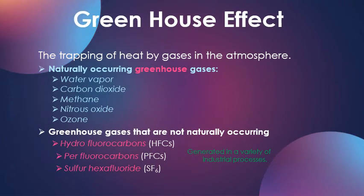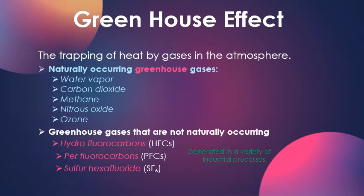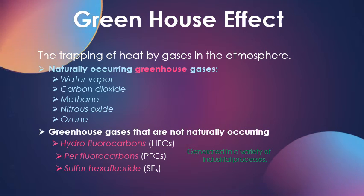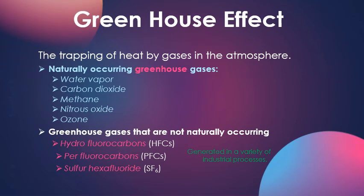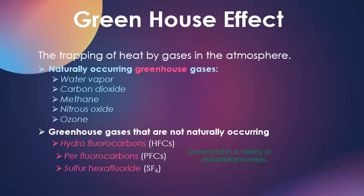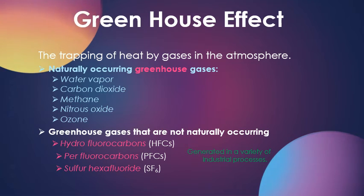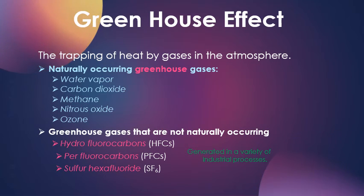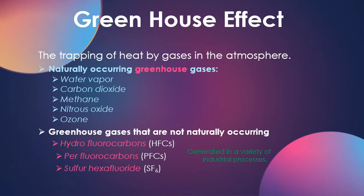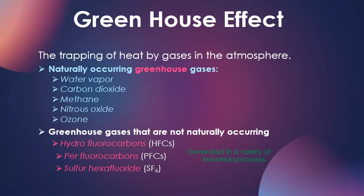Another major concern is the greenhouse effect — the trapping of heat by gases in our atmosphere. Naturally occurring greenhouse gases include water vapor, carbon dioxide, methane, nitrous oxide, and ozone. Non-naturally occurring greenhouse gases include hydrofluorocarbons, perfluorocarbons, and sulfur hexafluoride, which are generated in a variety of industrial processes.